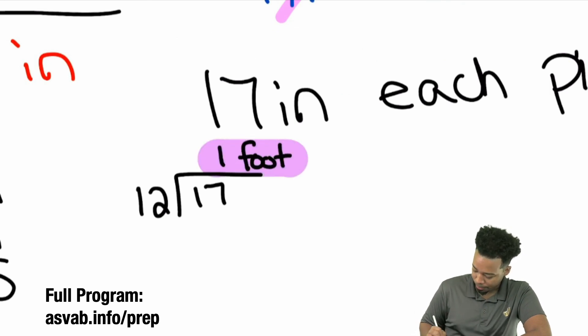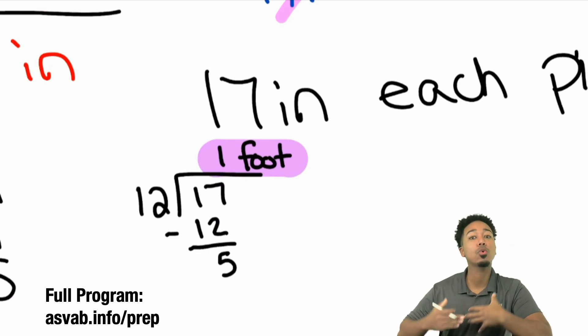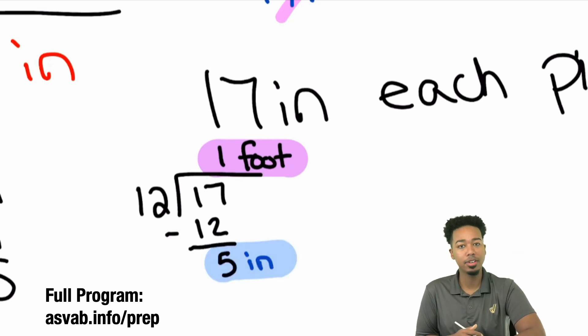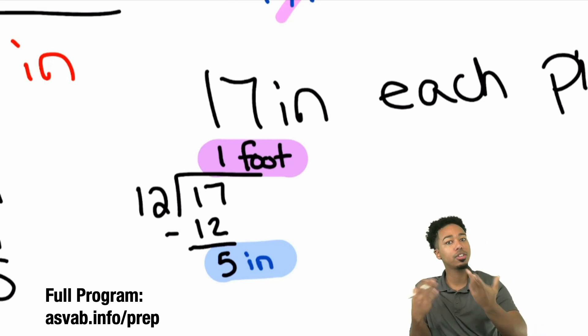12 goes into 17 one time. So that's one whole foot. That's one whole foot. But what ends up happening is when you subtract the 12, you have a remainder. And the remainder when you're converting is the remaining number of inches. That's the number of inches that remains. So we have that right there. One foot and five inches. That's going to be 17 inches. And that should make sense because one foot is 12 inches. Add the extra five and you get your 17. That should make sense.